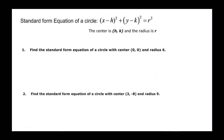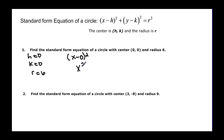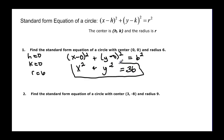Now we want to talk about circle equations. The standard form is: x minus h, quantity squared, plus y minus k, quantity squared, equals r squared. The point (h, k) is your center, and the key thing to remember is you're always subtracting in the formula. For example, find the standard form with center zero, zero and radius six. That gives us x squared plus y squared equals thirty-six.